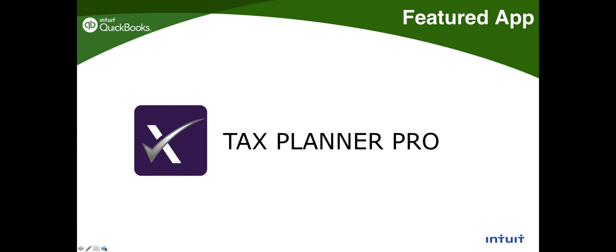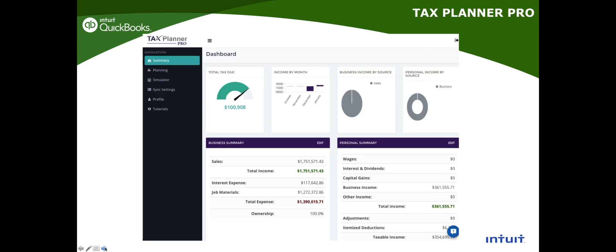Intuit actually has a sales tax module, but Avalara AvaTax goes much more in-depth. Intuit has financial reports from which you could do a little tax planning, but Tax Planner Pro goes a lot more in-depth. Same thing with 1099s — QuickBooks Online can do 1099s through a built-in e-file service, but it doesn't go as deep as the third-party app. Third-party app developers typically go much deeper into each function.